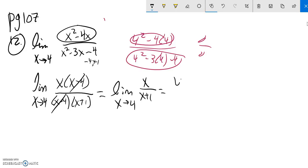I'll try some direct substitution now. Plug it in. 4 over 4 plus 1. That's 4 fifths. And that's my limit.